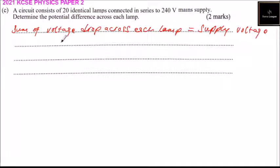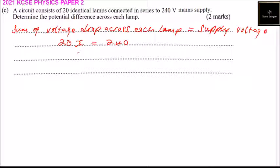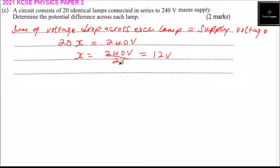Since we have 20 lamps, we say 20X equals 240. So X equals 240 volts divided by 20, which gives you 12 volts. That is the potential difference across each lamp.